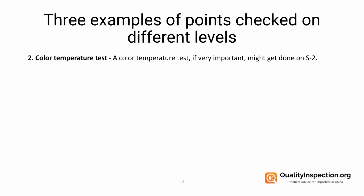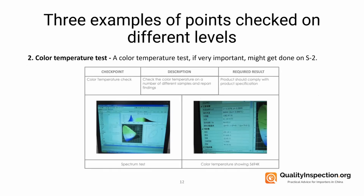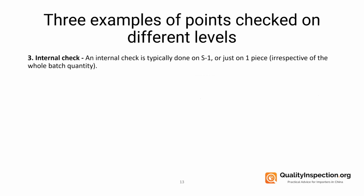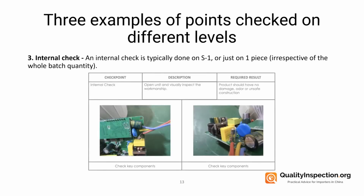Secondly, a colour temperature test — if this is important it might get done on S2. We check the colour temperature on a number of different samples, report the findings, and the product should comply with product specifications. Thirdly, an internal check, which is typically done on S1 or only on one piece — we open the unit and visually inspect the workmanship, and the product should have no damage, odour, or unsafe construction.